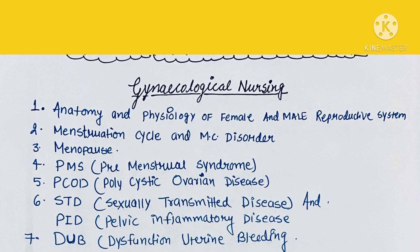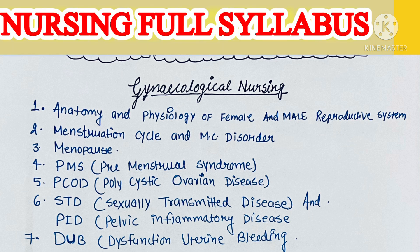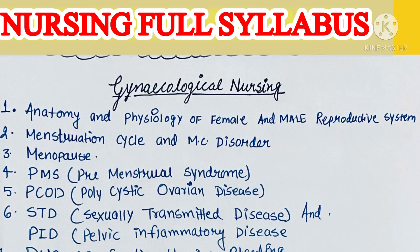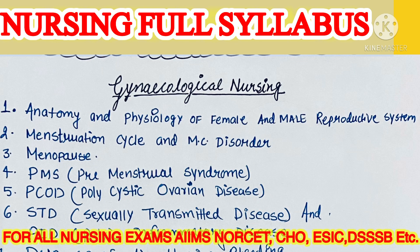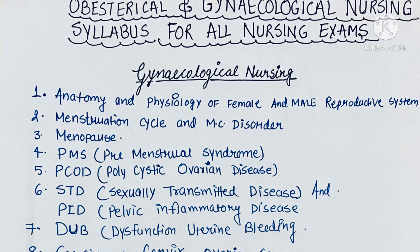First of all, in gynecological nursing, what is important? Anatomy and physiology — including the female and male reproductive system — is important. Questions also come from menstruation, menstrual cycle, menstrual cycle disorders, and menopause.